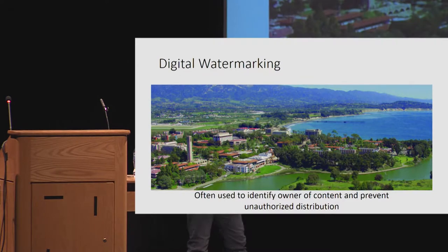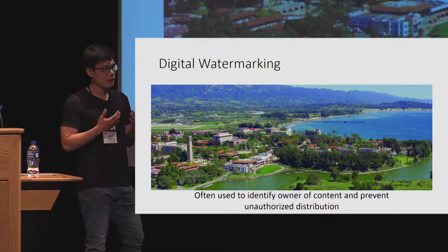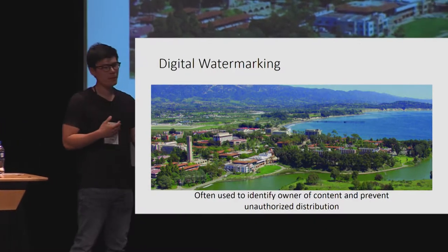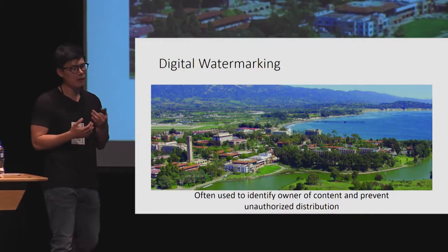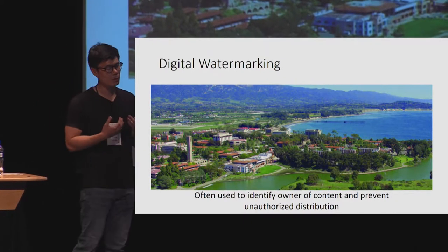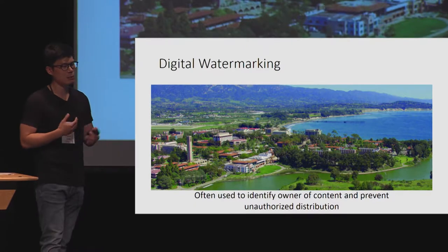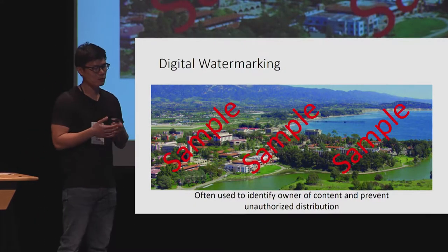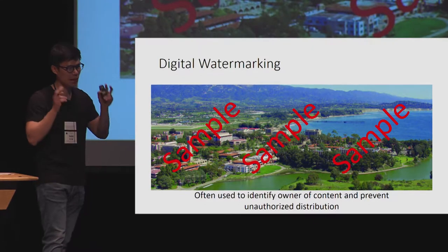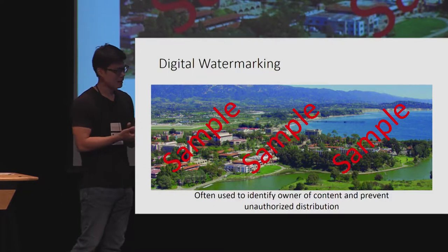This session is on cryptographic watermarking. Let's begin by discussing what watermarking actually is. Watermarking generally refers to a way of embedding a mark into some digital content like photos or images. This is often used for people to identify who the owner of the content is and also to prevent unauthorized distribution of this content. You may have seen a version of a photo or an image that has the word 'sample' embedded on top of the photo — this is an example of digital watermarking.